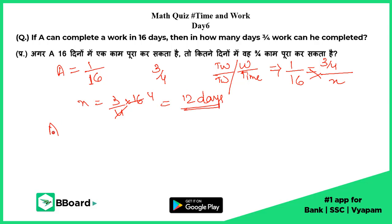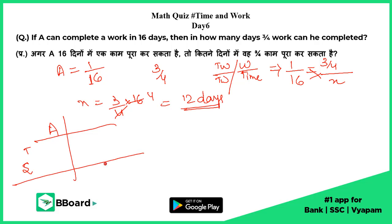We can also do this with the second method — the table method — where we write time here, speed here, and total work at the bottom. The question says A works in 16 days. Assuming A's speed as 1, the total work becomes 16.